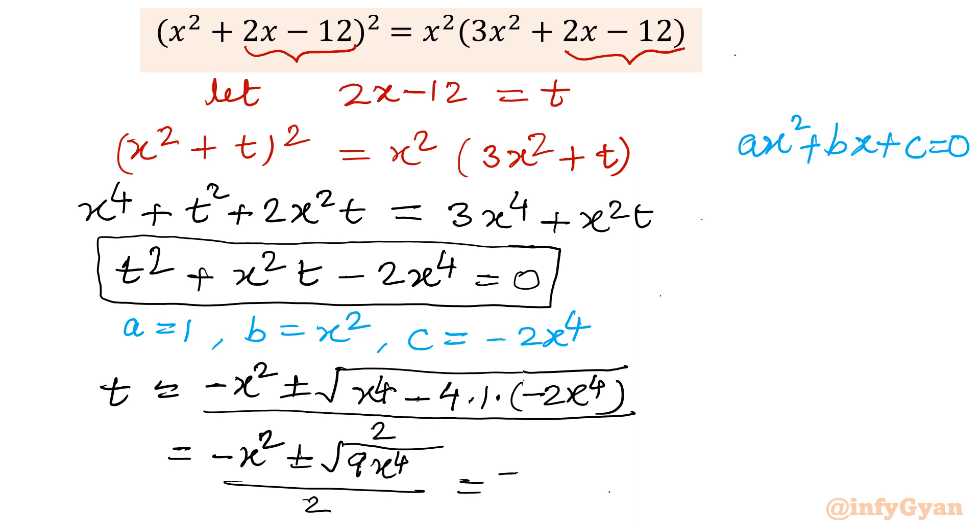Now you can see it is minus x square plus minus x power 4 plus 8x power 4, so 9x power 4 divided by 2. I will write minus x square plus minus square root of 9, 3x square over 2. If I consider plus sign in between, then 3x square minus x square, 2x square over 2, x square. And if I consider minus sign in between, minus 4x square over 2, so minus 2x square.